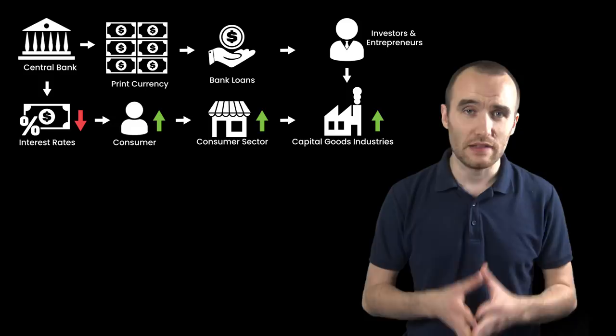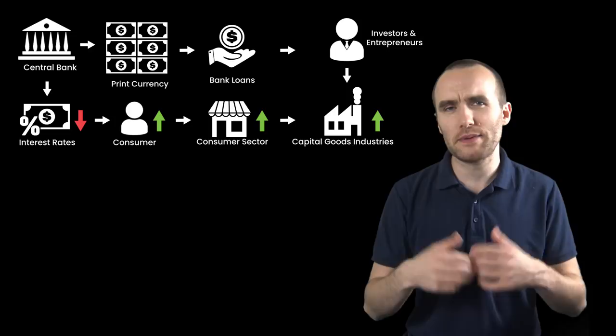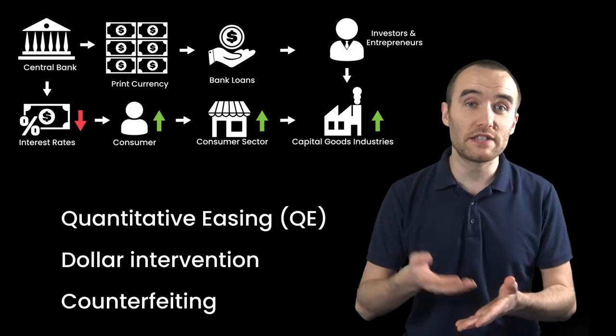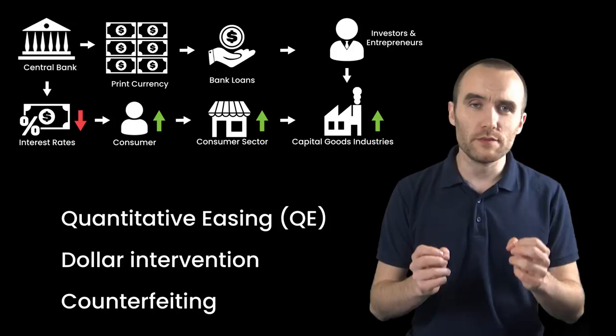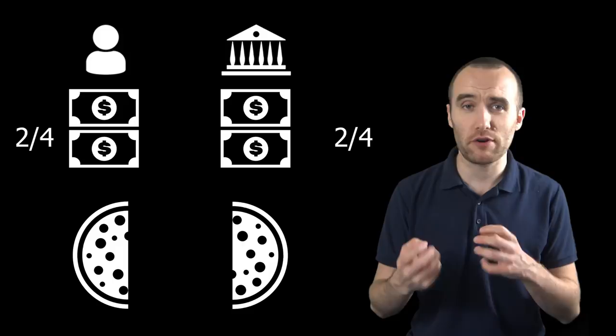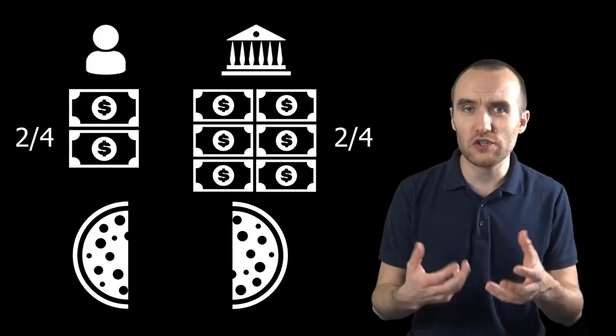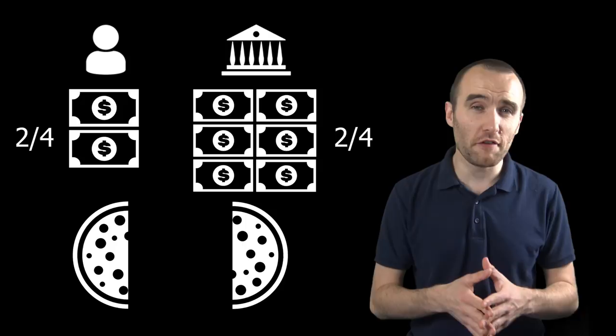Literally, they create currency from nothing. This process of printing currency has been known by various names such as quantitative easing, or dollar intervention, or counterfeiting. Either way, printing money creates what we call inflation. So let's say that they print some currency, and in doing so they double the currency supply. What has this done to your share of the currency? Well, you still have your two pieces of currency, but instead of being able to buy half of the food as you could before, now you can only buy a quarter.